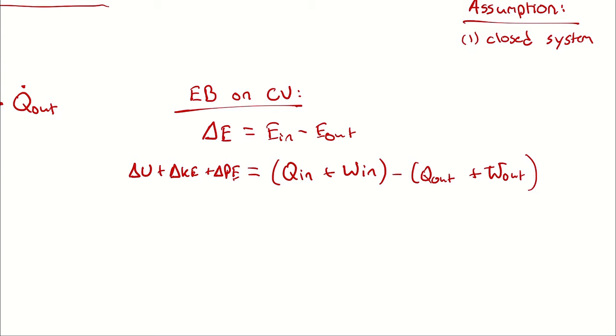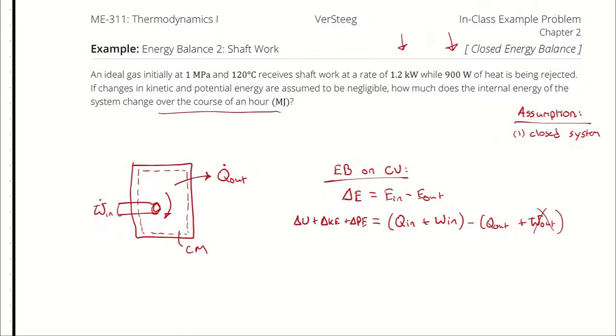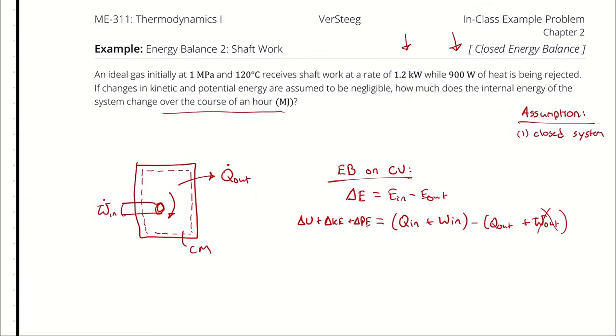Then I will neglect terms that aren't relevant to my analysis. I have work in the inward direction, so I'm going to get rid of work out. I was described only one heat transfer, and that's in the outward direction, and it's unlikely that there's going to be a complicated enough setup for there to be heat transfer in and out at the same time.